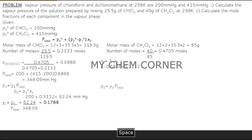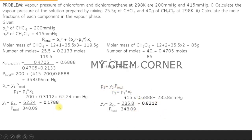Similarly for component 2: p2 = p2° × x2 = 415 × x2. Substitute to get p2, then y2 = p2 ÷ p-total. The entire problem reduces to: calculate molar mass, find moles, find mole fractions, substitute into the equation. Don't panic — even if the question seems complicated, it follows a straightforward step-by-step approach.